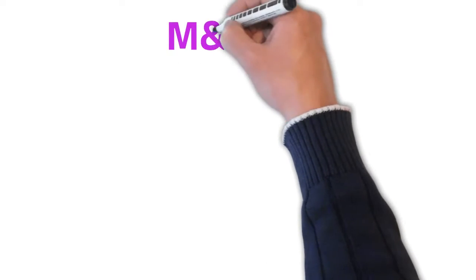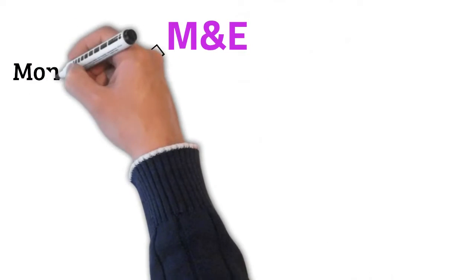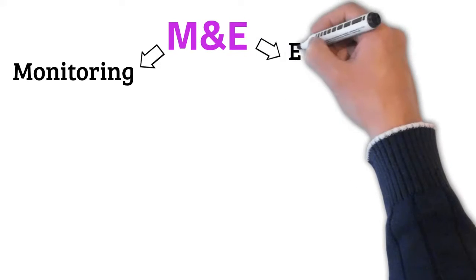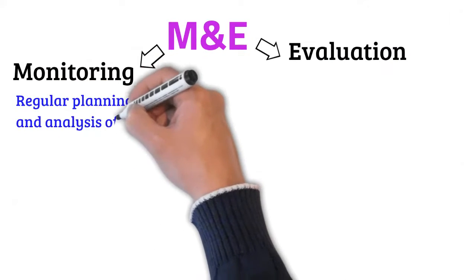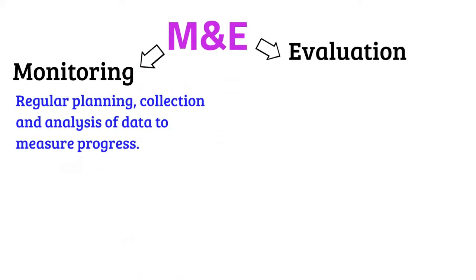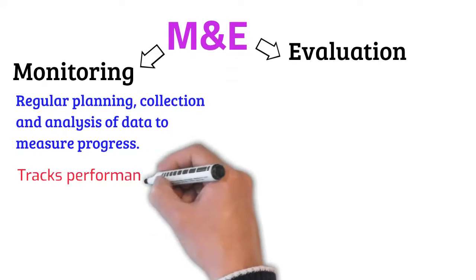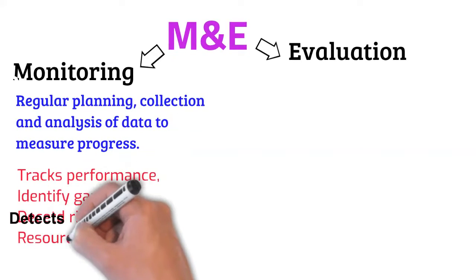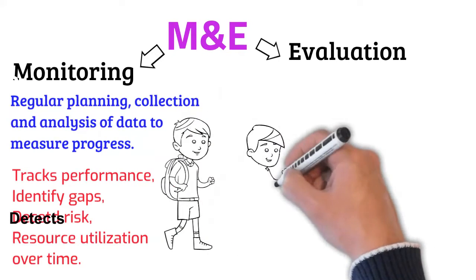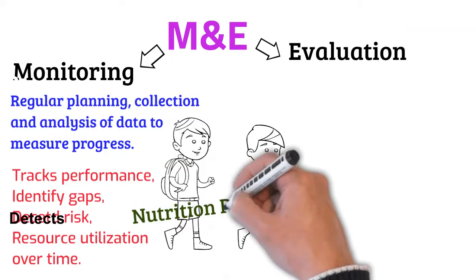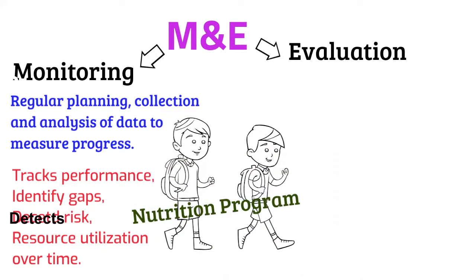Monitoring and evaluation is a combination of two different functions: monitoring and evaluation. Monitoring is an ongoing process of planning, collecting, and analyzing data to see that a project, program, or intervention is progressing well. Monitoring helps us track progress, spot implementation gaps, detect risks and challenges, and minimize resource wastage so that we can take timely actions. For example, a health program providing nutrition supplements to school children to reduce the prevalence of anemia may do monthly monitoring checks on several factors to see that everything is going well.